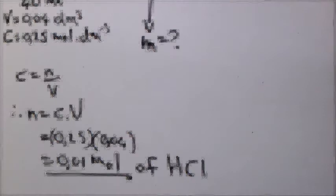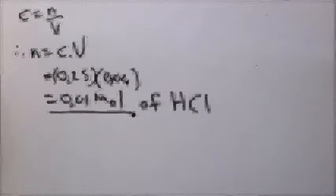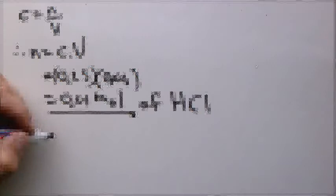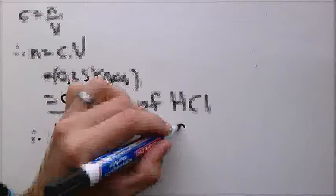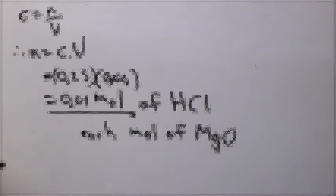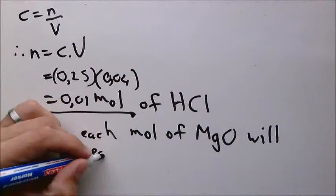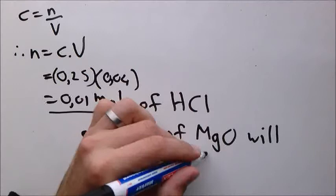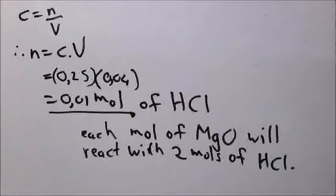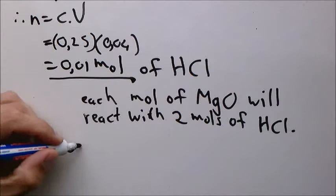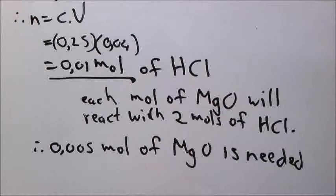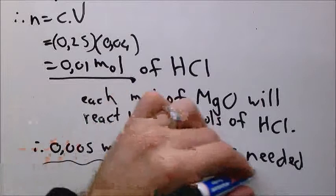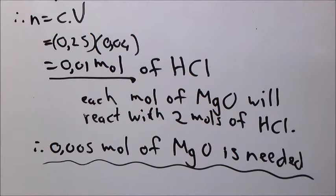Using the ratio: for each 1 mole of magnesium oxide, it reacts with 2 moles of hydrochloric acid. Therefore, 0.005 moles of magnesium oxide is needed. We got that by taking 0.01 and dividing by 2. Now the only step remaining is to convert this into mass, because that's what the question asks.